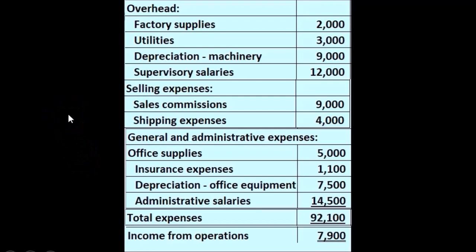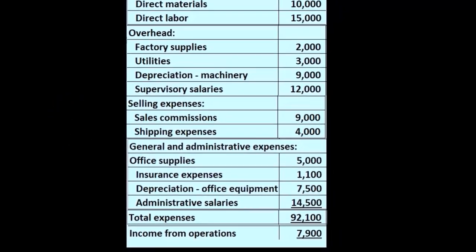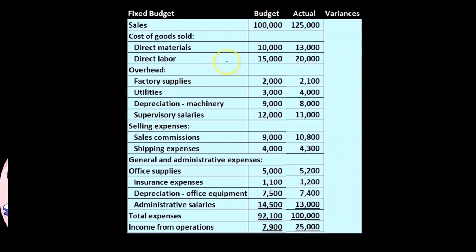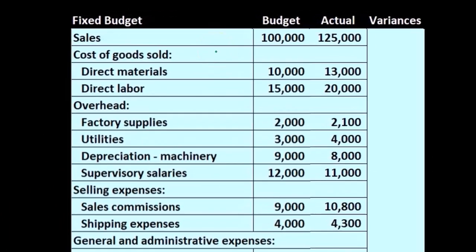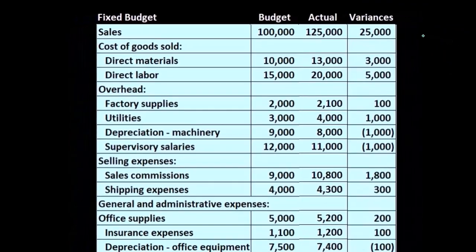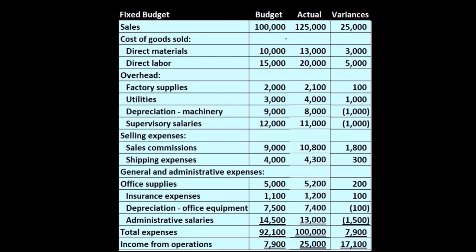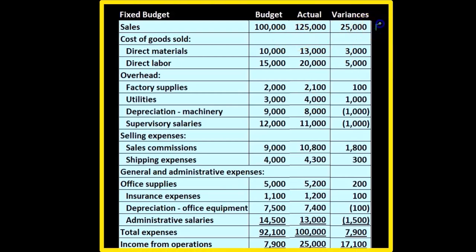Once the budgeting time period has passed, we compare the budgeted numbers to the actual numbers. We run the actual income statement — the performance statement over the time period — and then take the difference, otherwise known as the variances, between the budget and actual numbers. For example, if the actual sales are greater than budgeted, that's a favorable difference. Similarly, for cost of goods sold, direct materials, and direct labor, these are expense items we would examine.